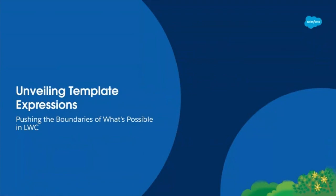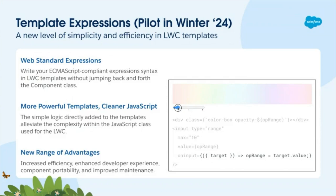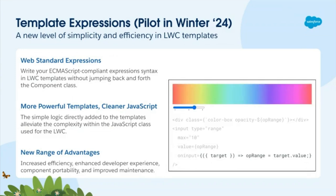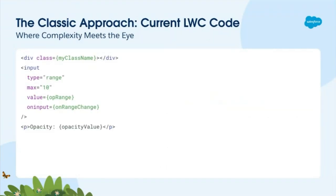Let's talk about template expressions, where we push the boundaries of what's possible in LWC. LWC template expressions are all about writing ECMAScript-compliant syntax directly into your LWC templates, which means less jumping between your template and JavaScript class. You will experience more efficient code, a better developer experience, and easier maintenance. Currently, you might find yourself hopping between the template file and the JS class to fully understand what's happening — for instance, to know what onRangeChange does, or to understand a class name or opacity value. Template expressions can streamline this by minimizing the need to switch between files.